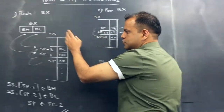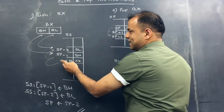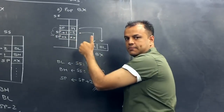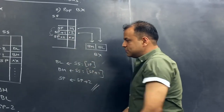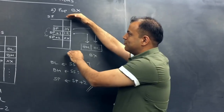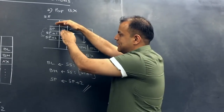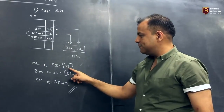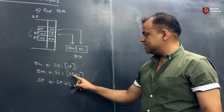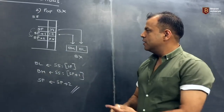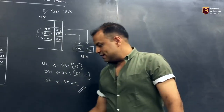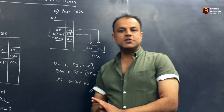In a PUSH, SP gets decremented by 2; in a POP, SP gets incremented by 2. To write the POP steps: BL gets the data from stack segment location SP; BH gets the data from stack segment location SP plus 1; then SP becomes SP plus 2. That's your PUSH and POP instructions.